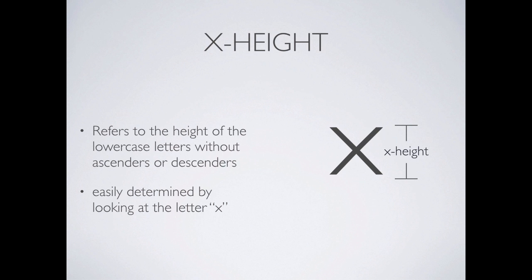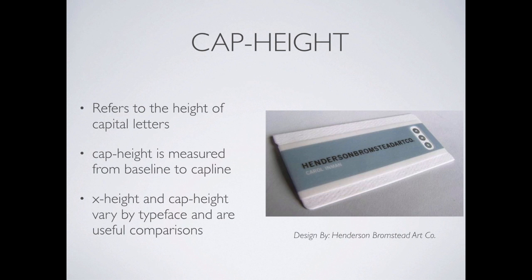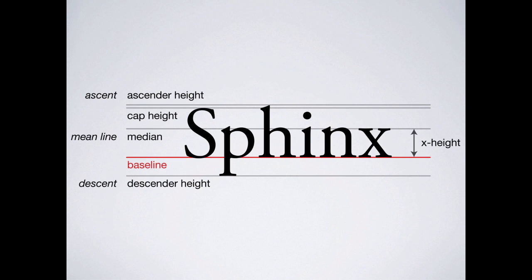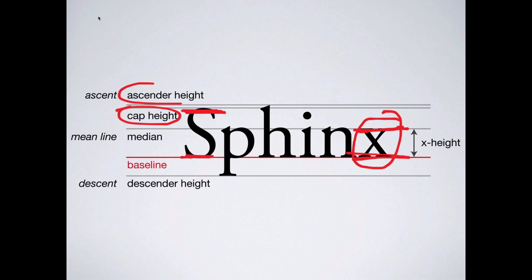X-height tells us a lot about a font and lets us compare fonts to other fonts. X-height is exactly what it says: the height of an X. X is a great letter to compare because generally it's square and has a consistent height. Cap height, on the other hand, is the height of a capital letter, which is different from an X. Looking at this form: the X-height goes from here to here; the cap height is up here, that's the height of your capital letter. Sometimes the cap height is the same as the ascender height — in this case the ascender height is just a little bit taller than the cap height. We also have a descender down here.